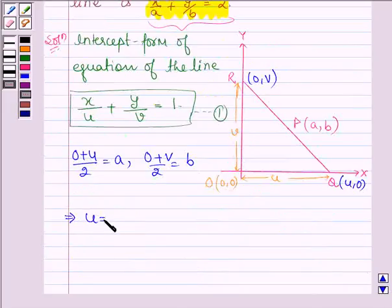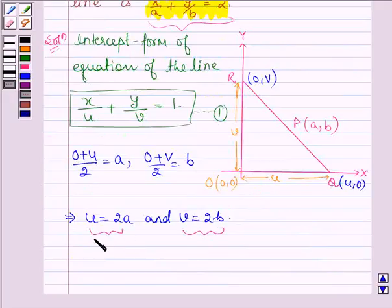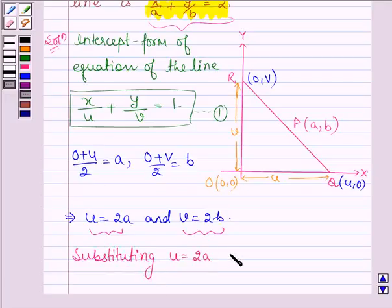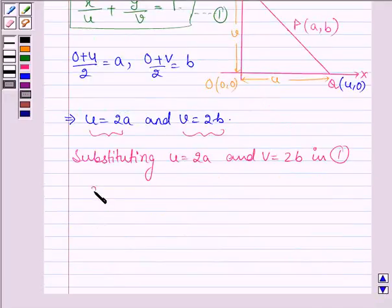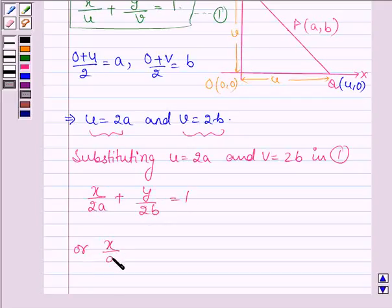This implies U equals 2A and V equals 2B. Substituting the values of U and V in equation number 1, we get X upon 2A plus Y upon 2B equals 1, or X upon A plus Y upon B equals 2.